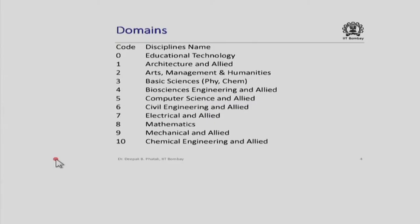The activities people do will pertain to some domain. In the first 4 weeks you already identified domains of work. These domains — the fields of education — have been listed. Please note domains numbered 1 through 10 have already been listed earlier. We have added one more domain with code number 0, which is 'Educational Technology.'